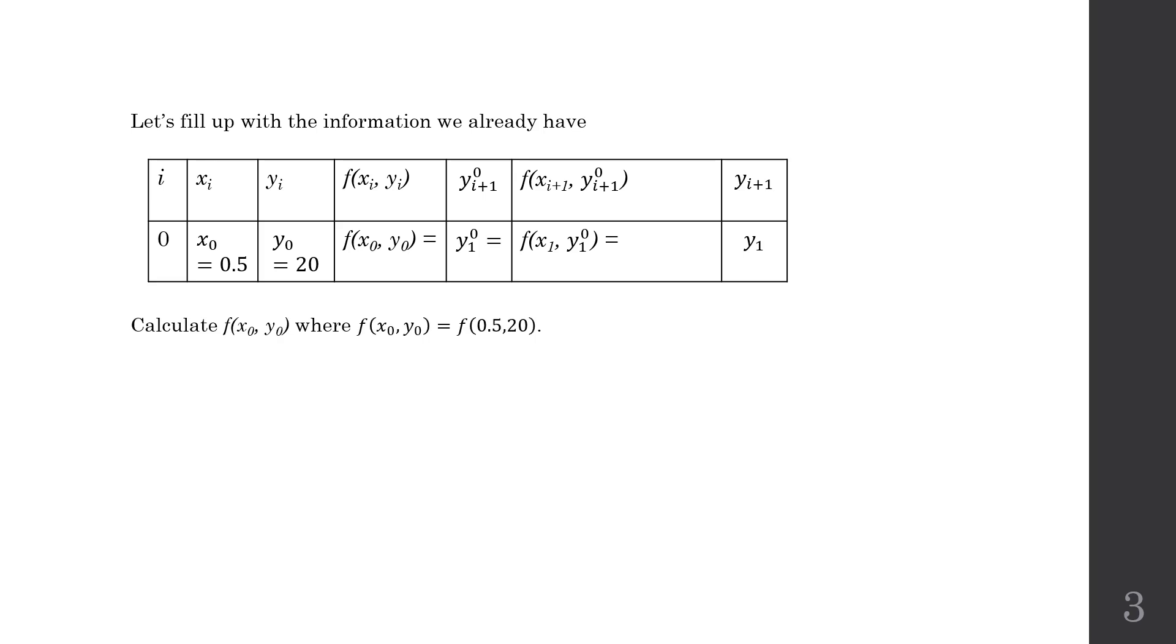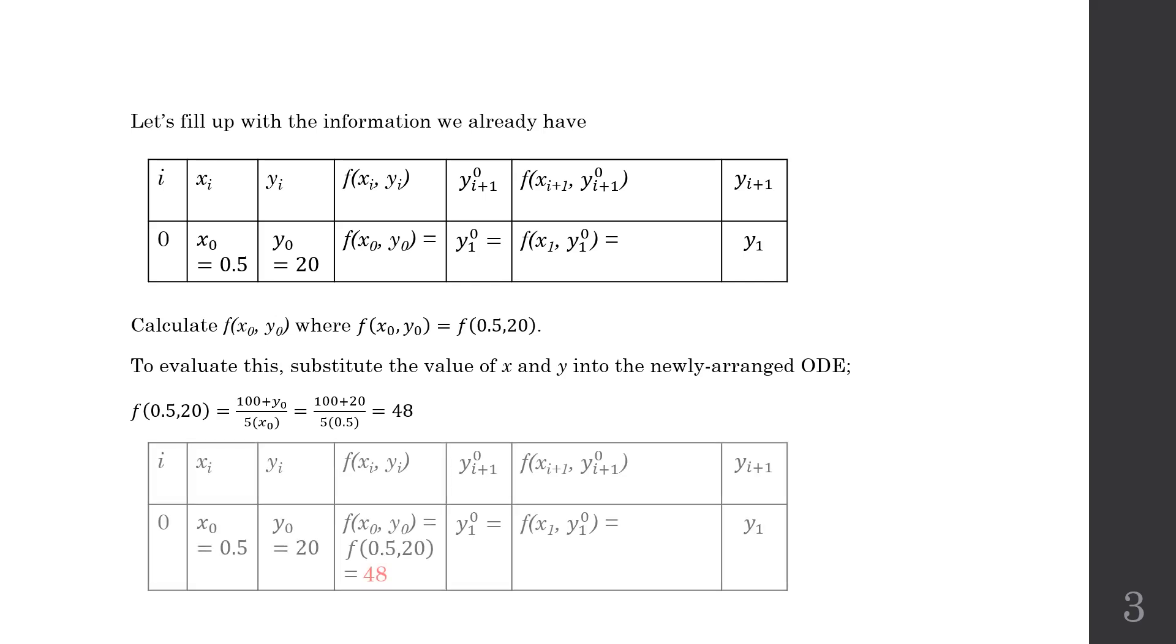Let's further calculate the rest of the column. We can calculate the derivative at point (x0, y0), which corresponds to the first derivative at coordinate (0.5, 20). So we substitute the coordinates into the newly arranged ODE, which is (100 + y0)/(5 × x0). So we got 48. This is the first derivative at point (0.5, 20). So let's update our table: 48 as the first gradient at that particular point.